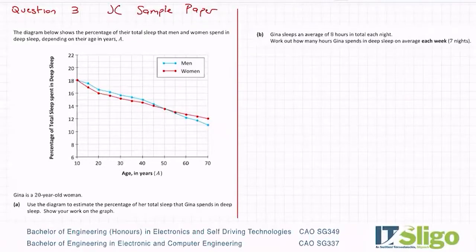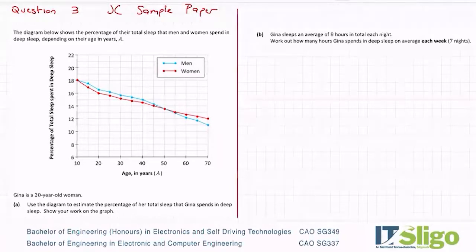Part A: Gina is a 20-year-old woman. Use the diagram to estimate the percentage of her total sleep that Gina spends in deep sleep. It's so important on any functions question that you show your work on the graph, because there isn't much maths — what they're examining is your ability to read a graph.